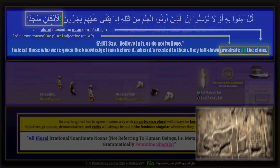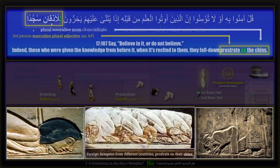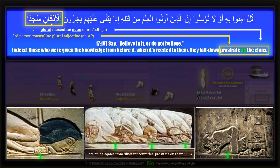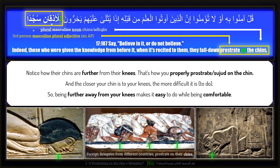Here are some depictions of ancient Sumerians, Babylonians, and ancient Egyptians prostrating on their chins, which is not a new thing. Notice how their chins are further from their knees — this is how you properly prostrate on the chin. The closer your chin is to your knees, the more difficult it is, so being further away makes it easier and more comfortable.